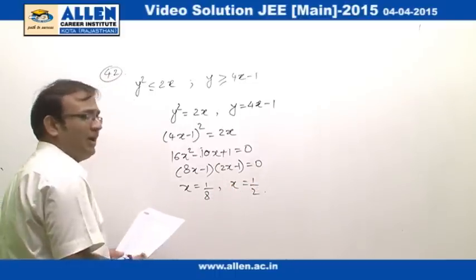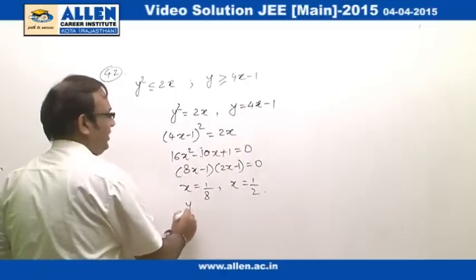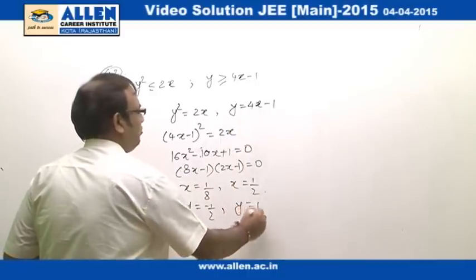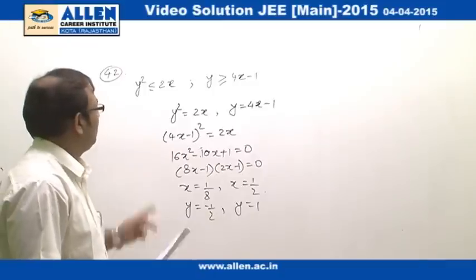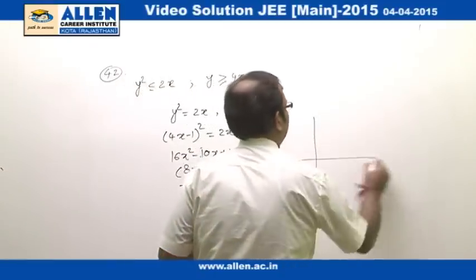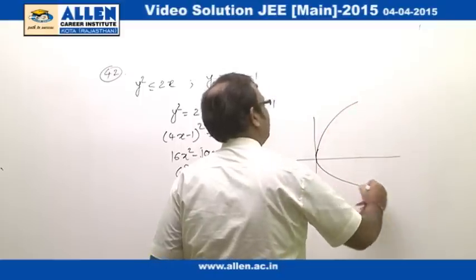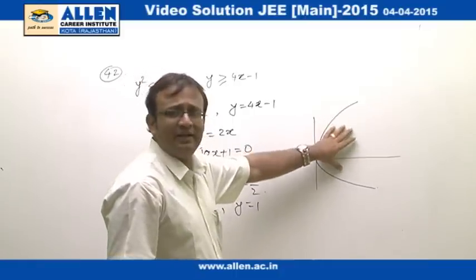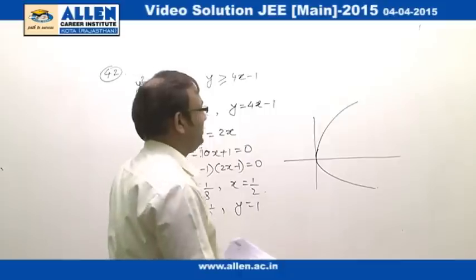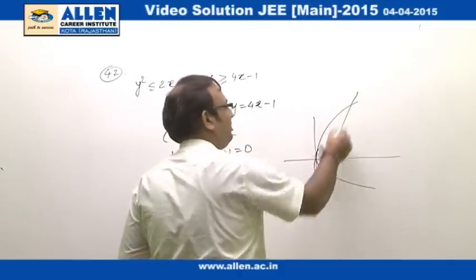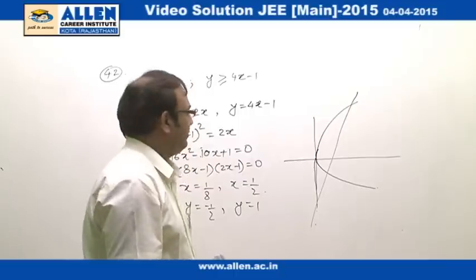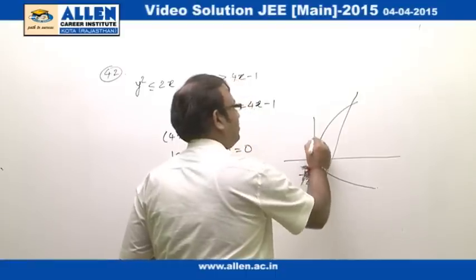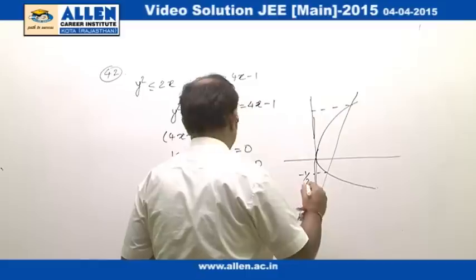Correspondingly we find the values of y. Putting x=1/8, we get y=−1/2, and putting x=1/2, we get y=1. So the two intersection points have y-coordinates −1/2 and 1.